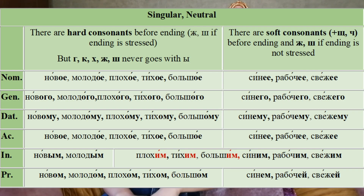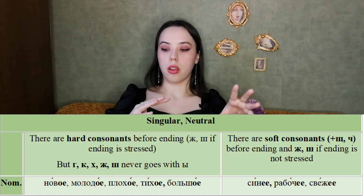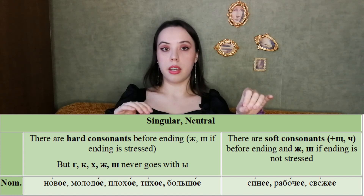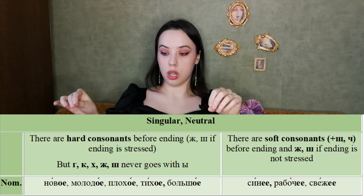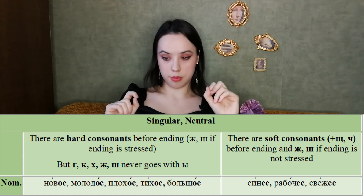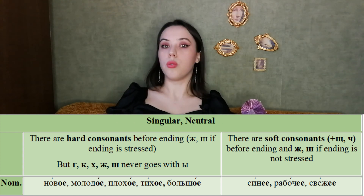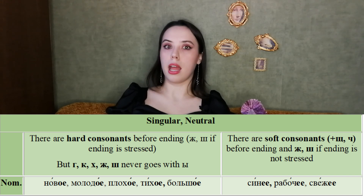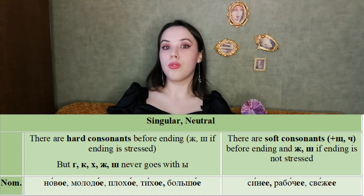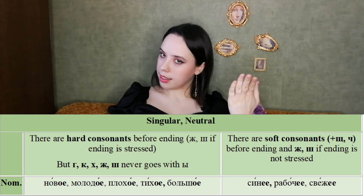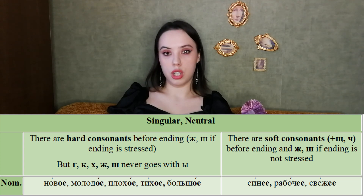Dear friends, next we go to neuter singular adjectives, and there will be two versions — hard and soft. The hard version applies when the ending is stressed; the soft version includes Ш, Ч, Щ, Ж, or when the ending is unstressed. For the nominative, the neuter ending will be ОЕ — новое, молодое, плохое, тихое, большое. For the soft version, the ending will be ЕЕ — синее, рабочее, свежее.